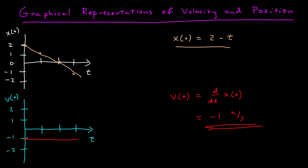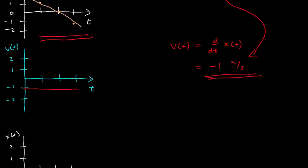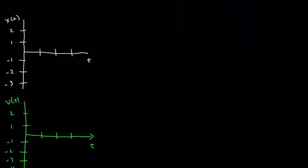Remember, the relationship between the derivative of a function and the function is that it gives you the slope of the tangent line at that point. Well, if I have a line here, the slope is the same everywhere. The slope of this function is, in fact, negative 1, which is the velocity function.